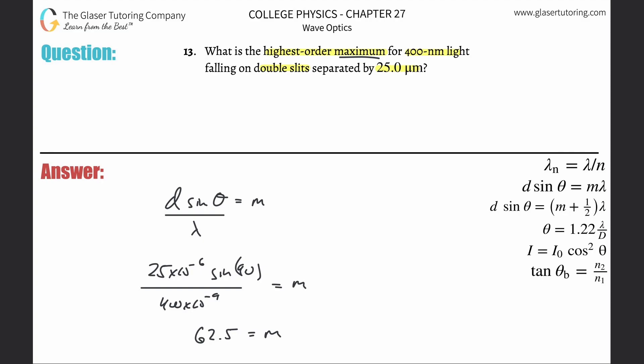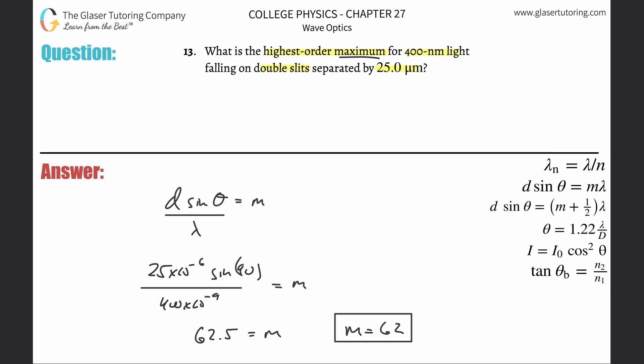So can you have half of an order? No. You cannot have 62 and a half. You might ask, should I round up or should I always round down? Because the max is at 62 and a half, but the order maxima have to be whole integers. So you're always going to round this answer down. Technically the value should be 62 — that would be the highest order of maximum. Never round up, always round down.